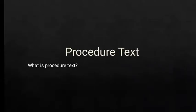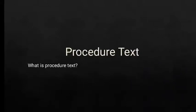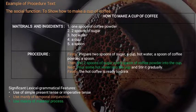Now let's move to the last type I can explain in this video: procedure text. What is procedure text? Procedure text is a text designed to describe how something is achieved through a sequence of actions or steps. It explains how people perform different processes in a sequence of steps. The social function of procedure text is to show how something is accomplished through a sequence of actions or steps.